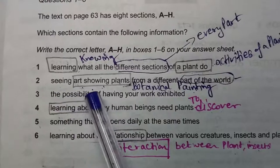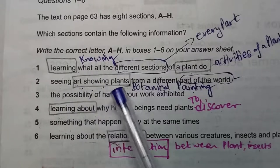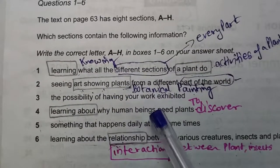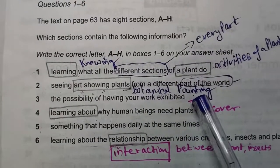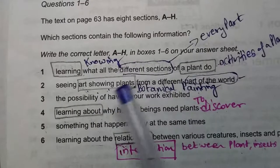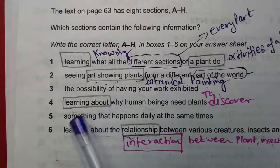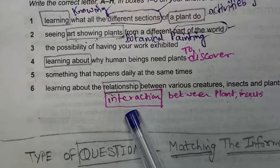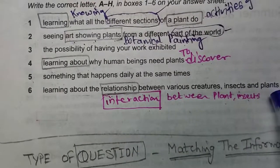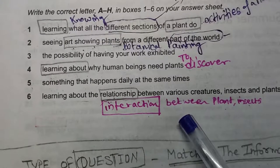Let's look at the next words. In the second question I have chosen the word 'art showing plants.' The writer has used another word for this — it is 'botanical painting.' Art is painting; art showing plants is botanical painting. Next, 'learning about' is 'to discover.' And next is 'relationship between various creatures, insects and plants.' You have to fit the synonyms according to the sentence meaning.